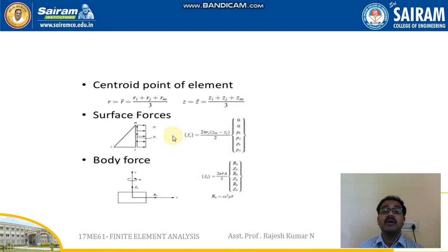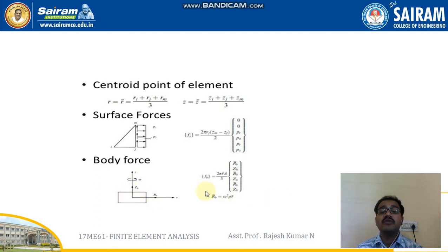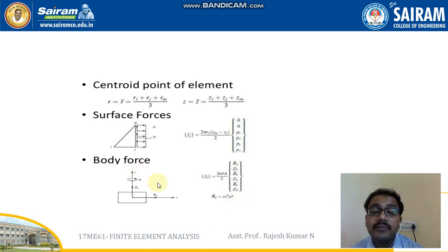We have two more forces particular to the axi-symmetric element: surface forces and body forces. For surface forces, the formula is: Fi = 2π·rj·(Zm − Zj)/2 into the matrix [0, 0, Pr, Pz, Pr, Pz]. For body forces with respect to axes r and z, the body force is Fb = 2π·f·A/3, where f indicates the exact body force. In matrix form we get [Rb, Zb, Rb, Zb, Rb, Zb], where Rb = ω²·ρ·r and Zb relates to acceleration due to gravity, density, and angular velocity.